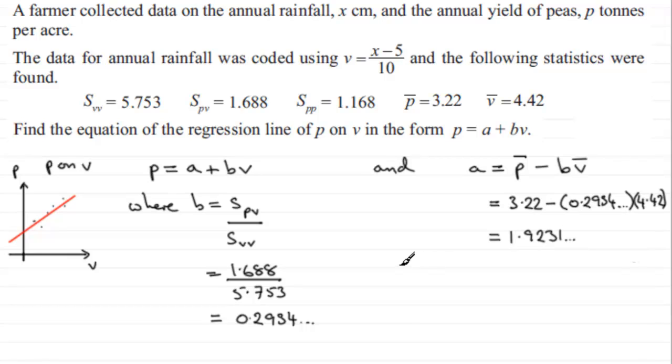So now that we've got the values of a and the values of b, we can substitute them into here, and we therefore have the equation. Equation of the regression line.